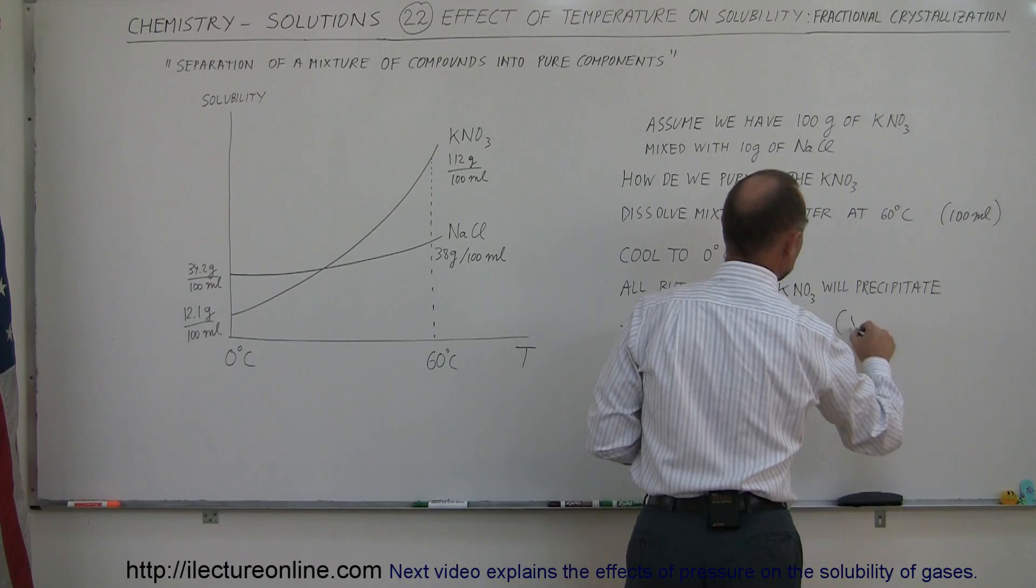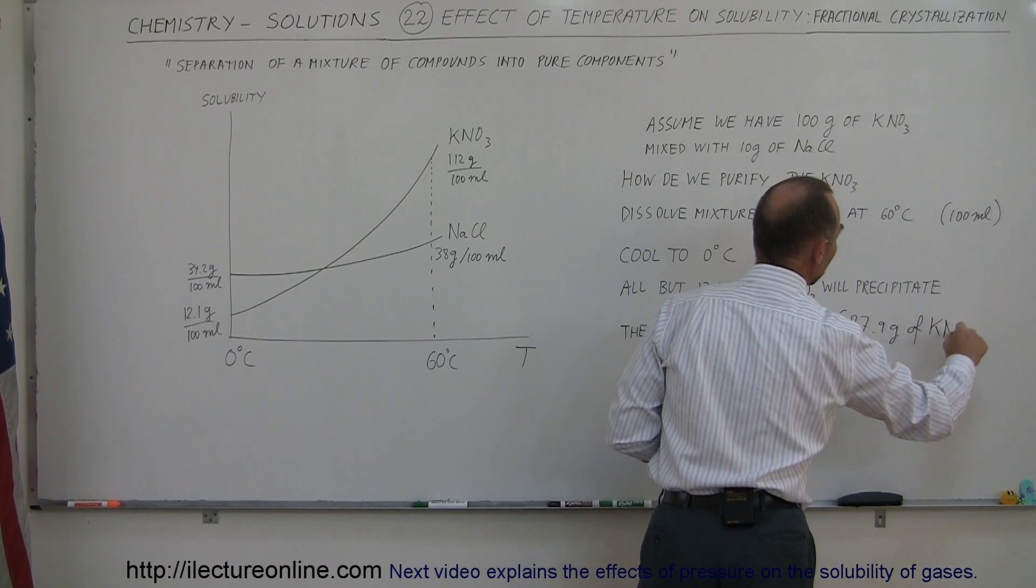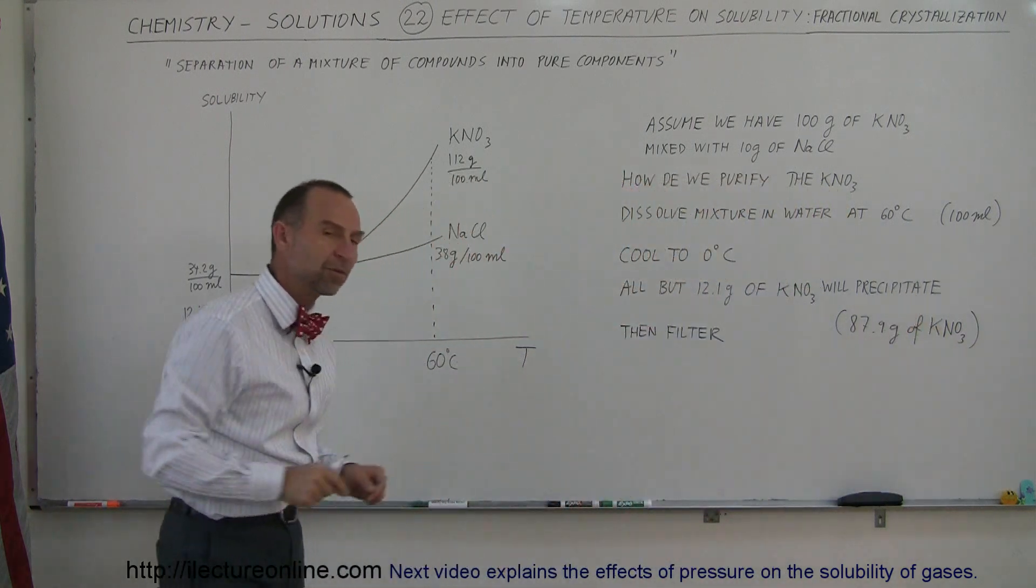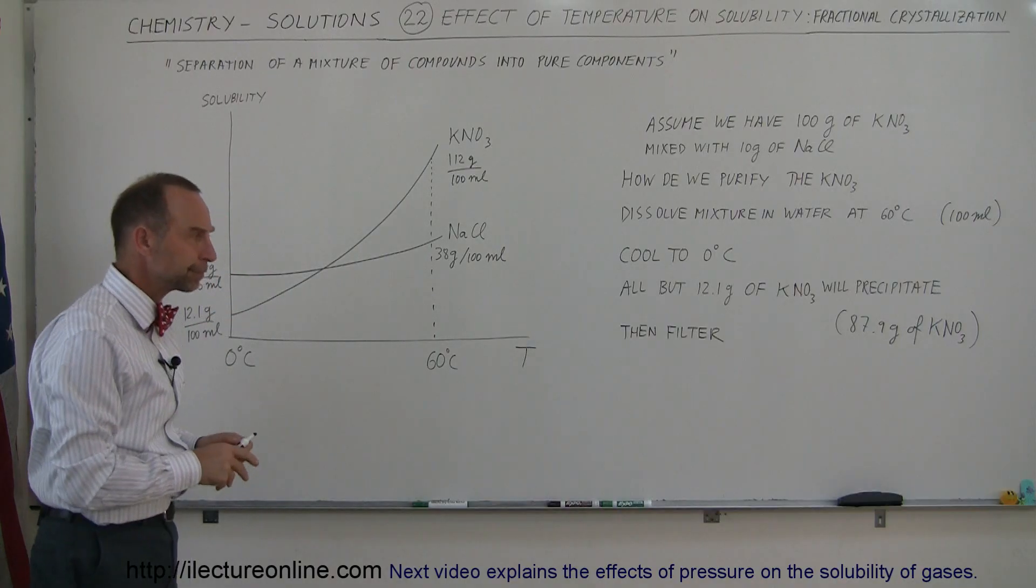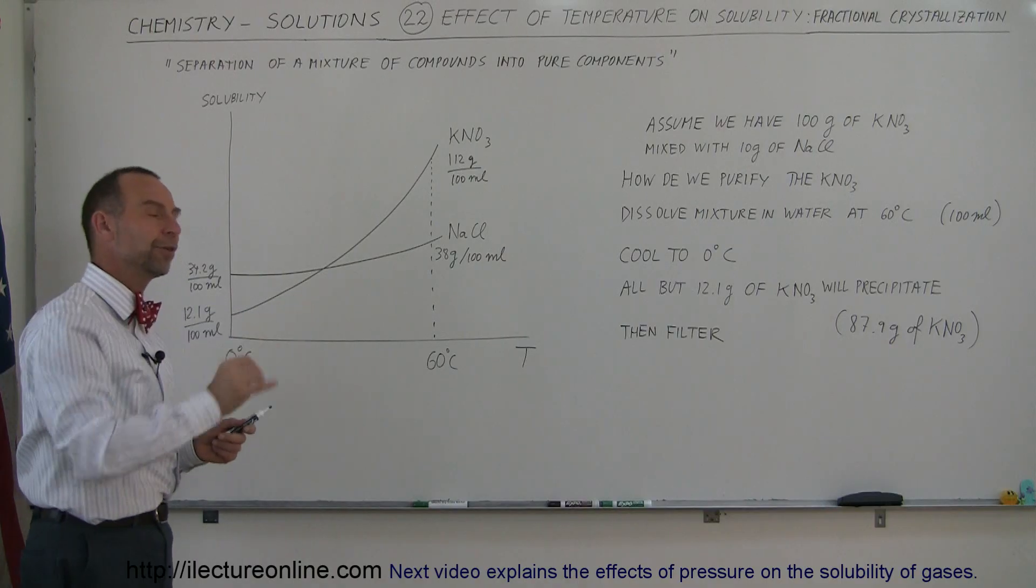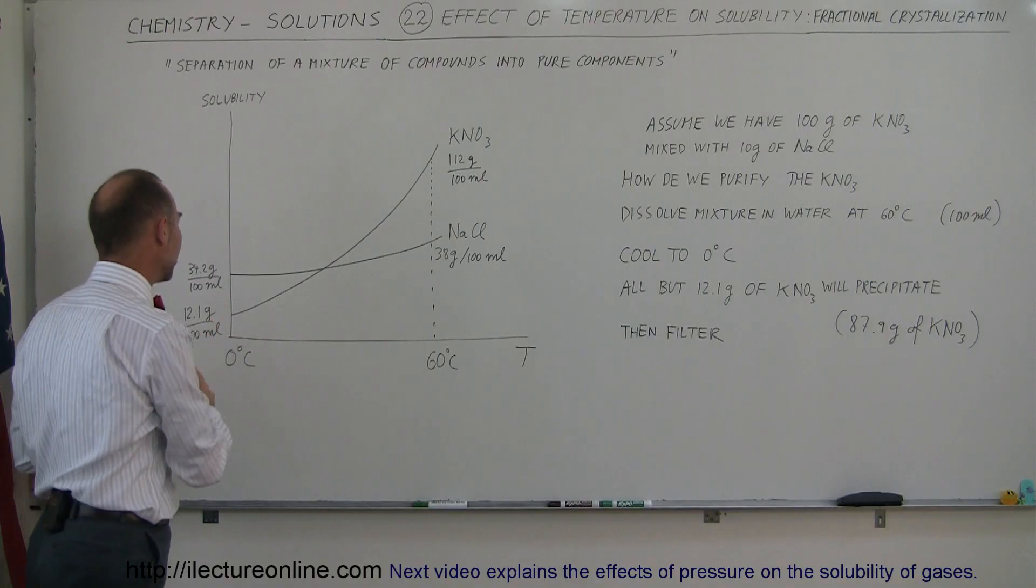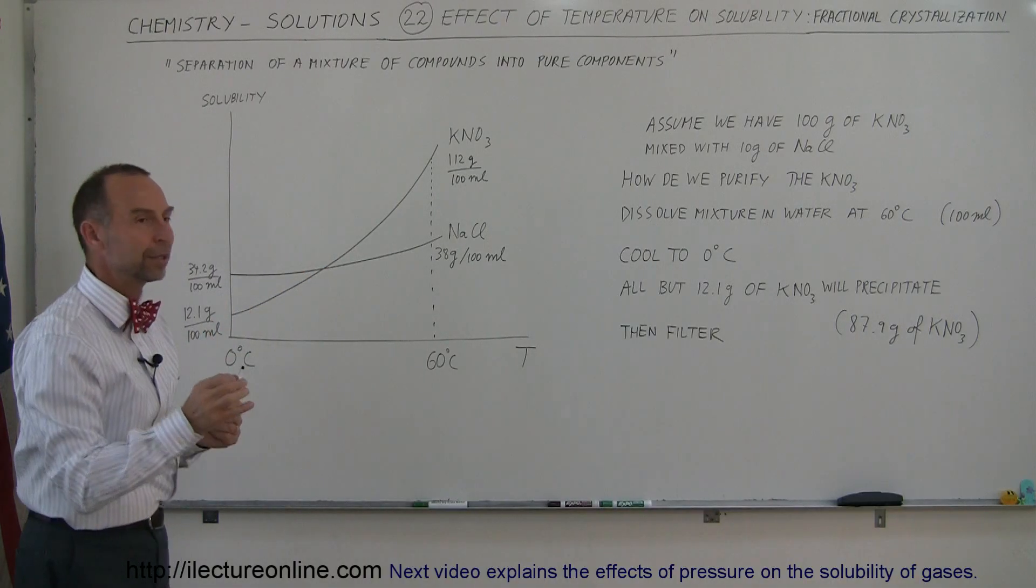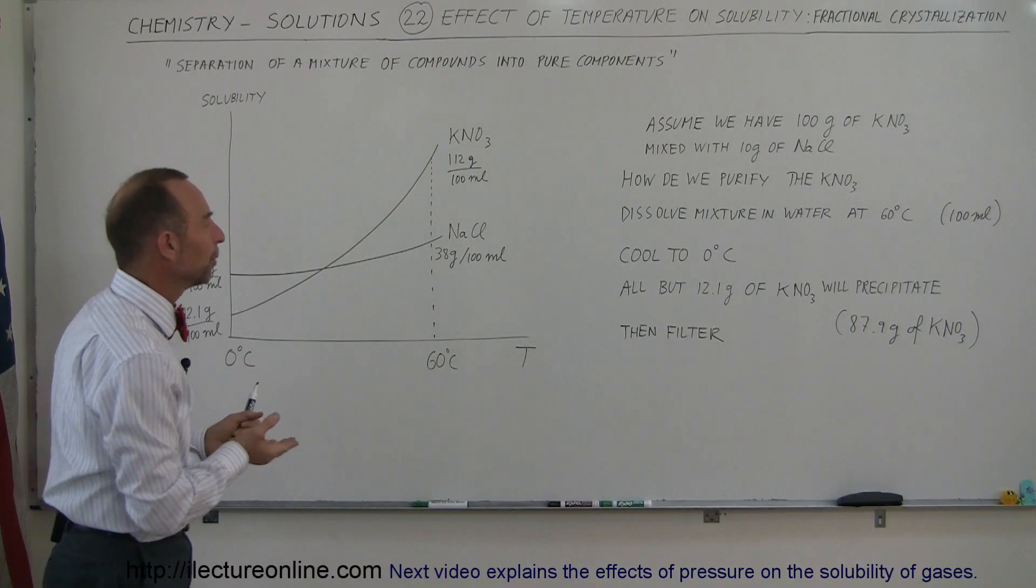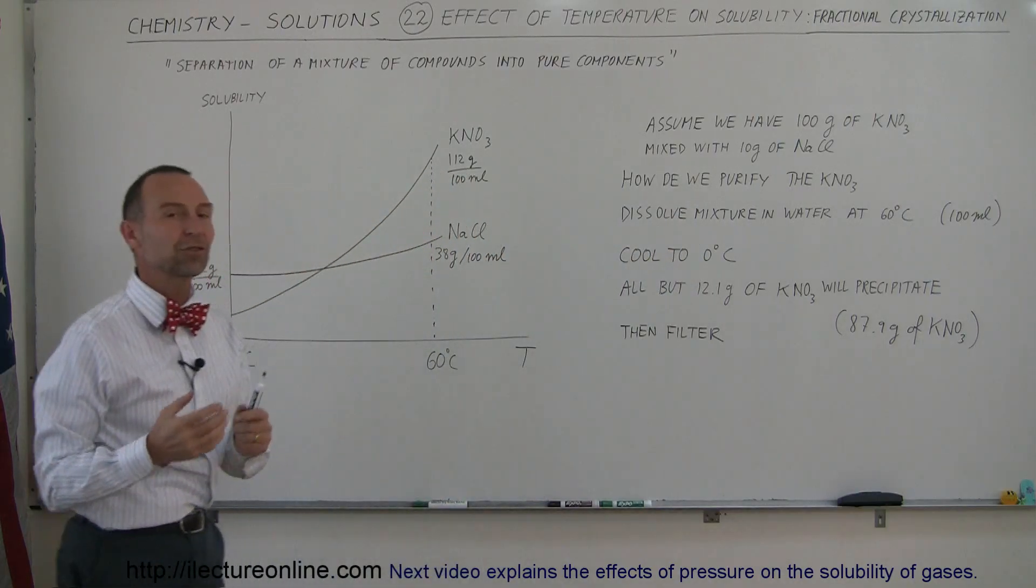So that would be 87.9 grams of potassium nitrate will precipitate out of solution, will become a precipitate at the bottom of your beaker. Then you want to filter it. You take your solution at zero degrees centigrade, you pour it through a filter. The solution part, the aqueous part that contains a little bit of potassium nitrate and all of the sodium chloride will go through the filter, and what will remain inside the filter will be wet but solid potassium nitrate in solid form.